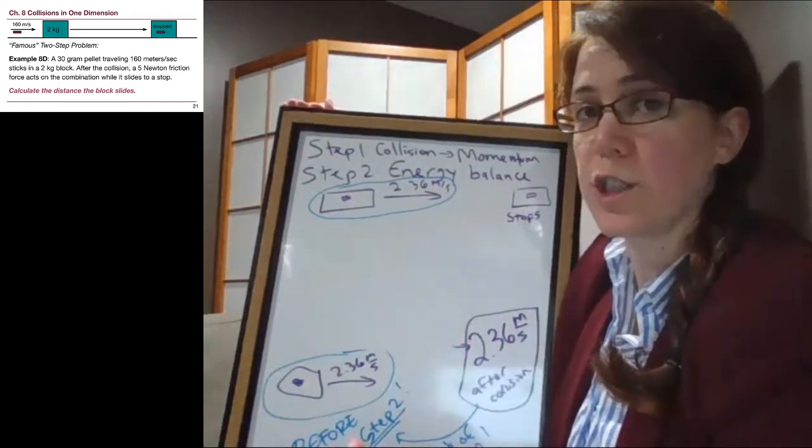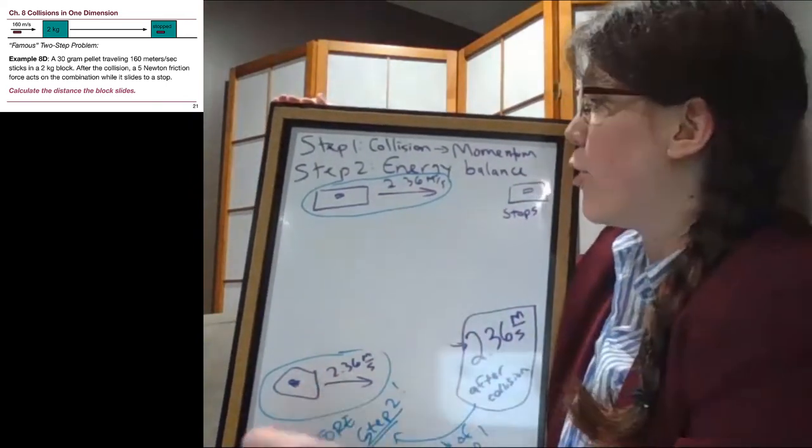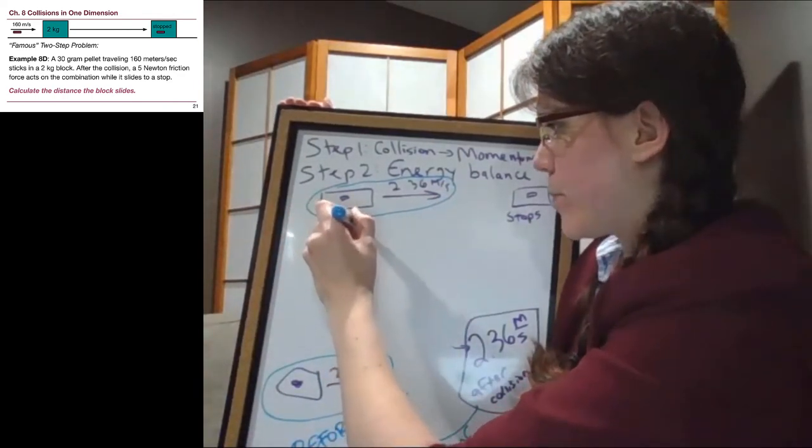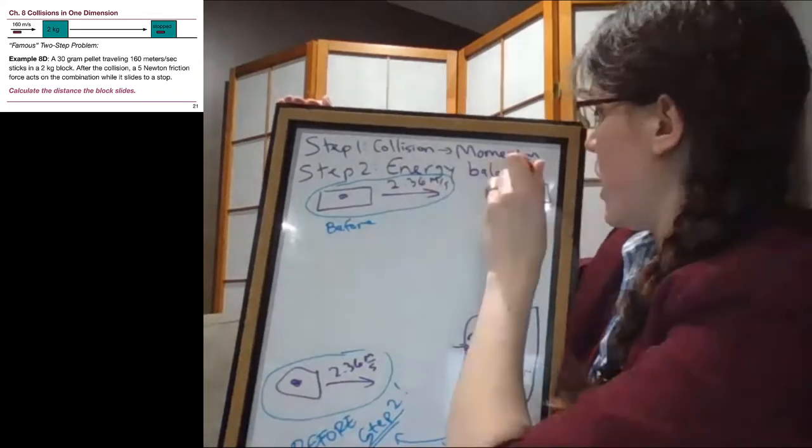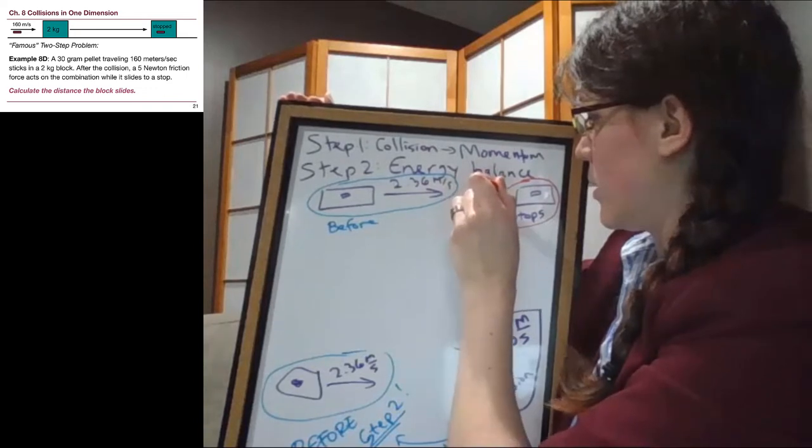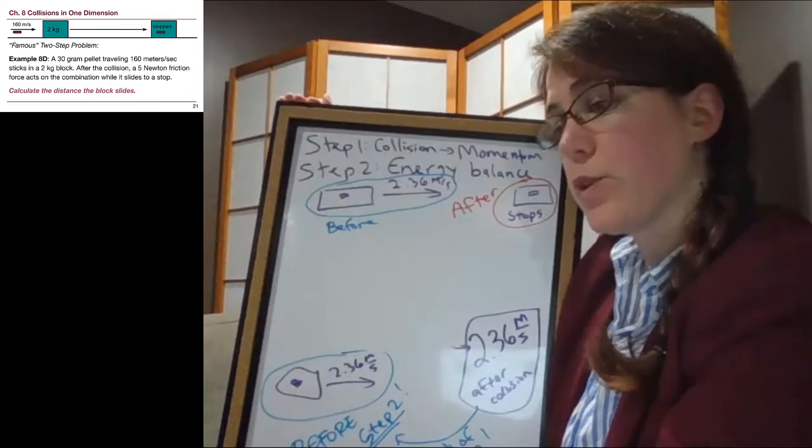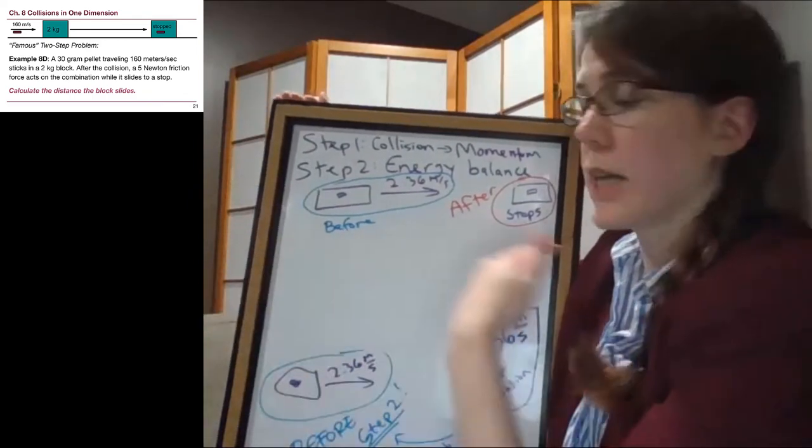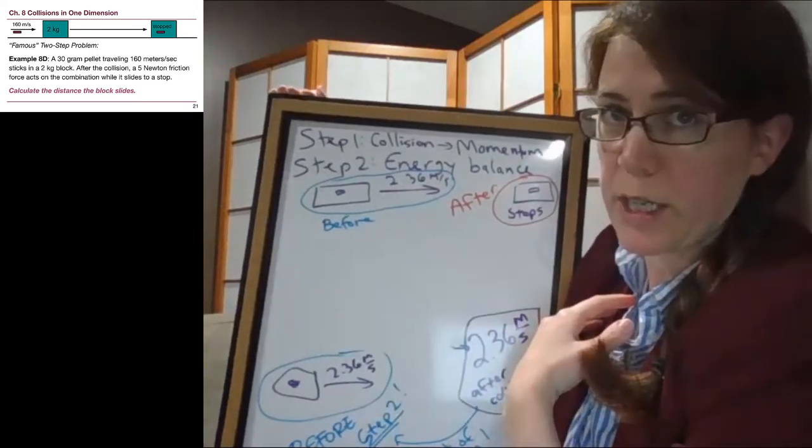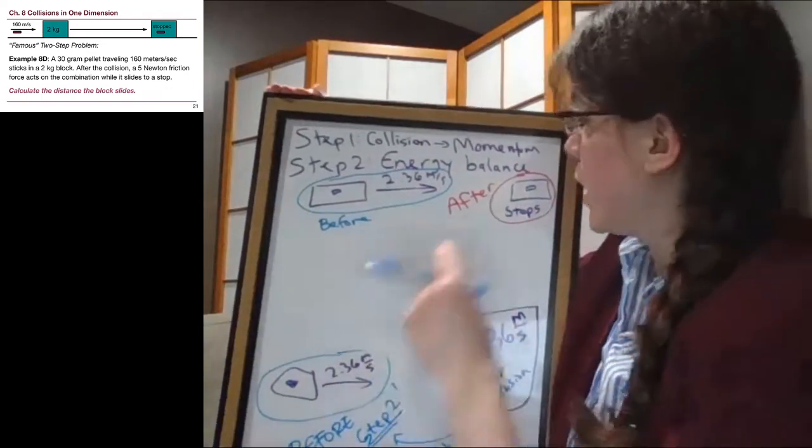We cannot just take the tiny pellet as our before and the whole system as our after in a single energy problem. Our energy problems never have the mass changing. Now for this one, this is our before situation, and when the block is stopped over here, it's our after situation.